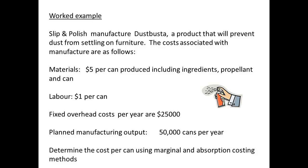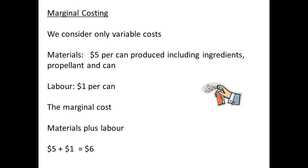Let us consider a worked example. The Dust Buster is a product that prevents dust settling on furniture. The materials cost $5 per can and the labour cost is $1 per can. The fixed overhead costs are $25,000 per year and the plant aims to manufacture 50,000 cans per year. With marginal costing we consider only the variable costs: materials at $5 and labour at $1, giving a marginal cost of $6 per can. The fixed overhead costs are not part of the marginal costing calculation.